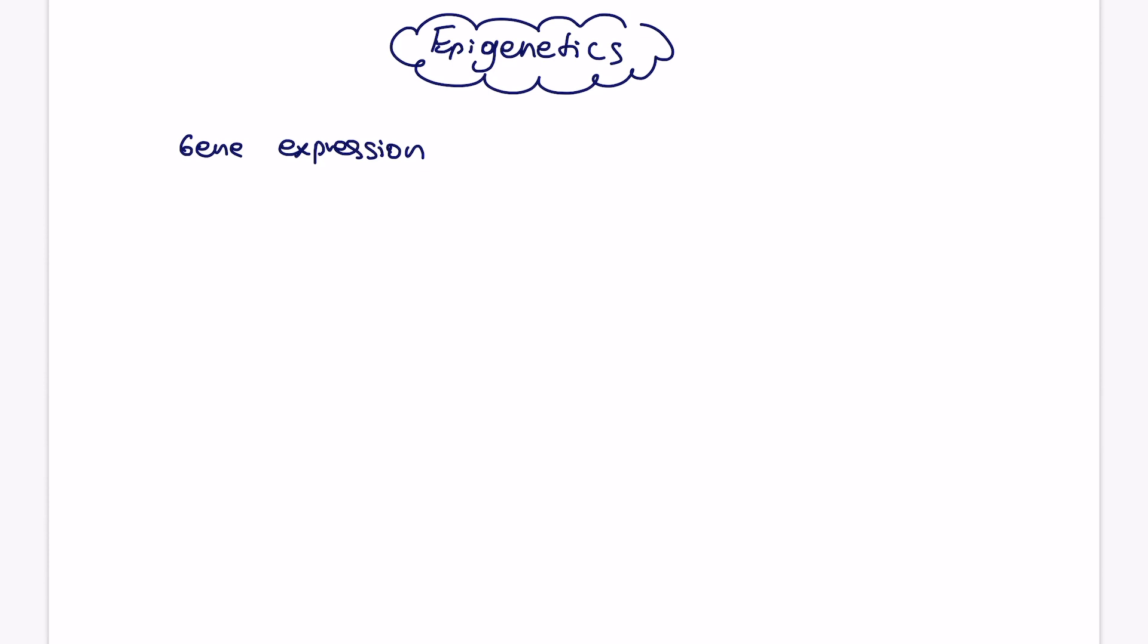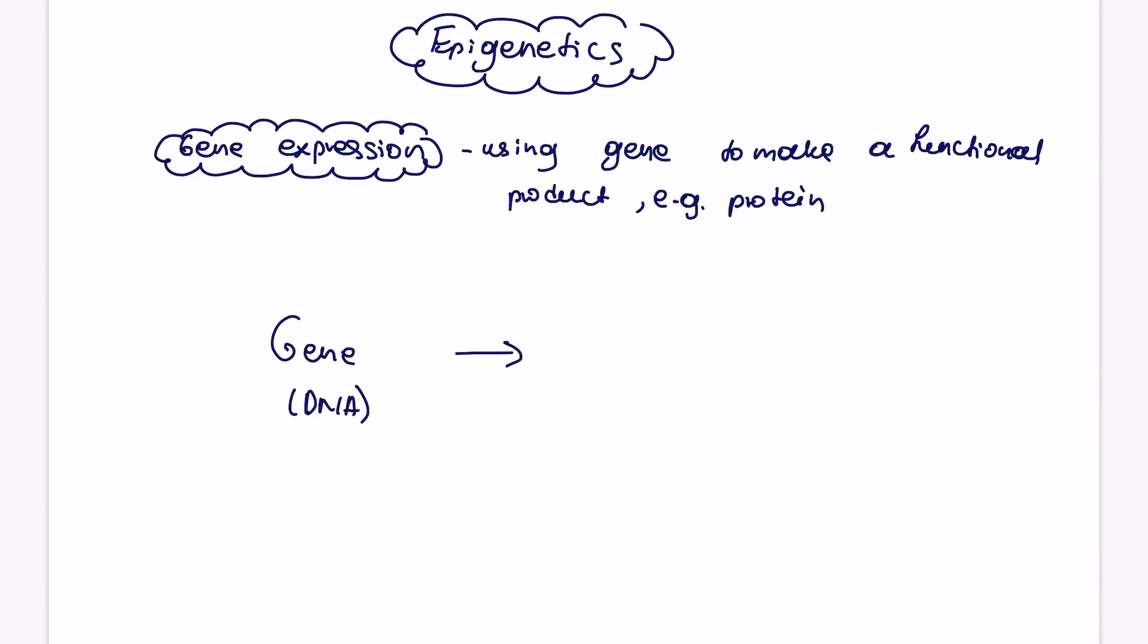So gene expression is a process where the gene is used to make a functional product, such as, for example, protein. It could still be tRNA or RNA, but for the purpose of this topic, we're interested in how gene expression is used to make a protein. So if we start with a gene, that will obviously be refined in the DNA. So gene is a section of DNA that codes for a particular protein. So gene then will be transcribed into mRNA, and then that will be made into a protein.